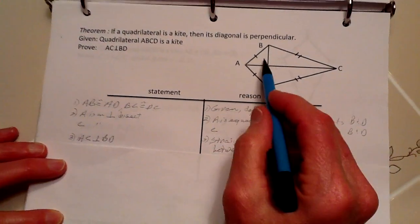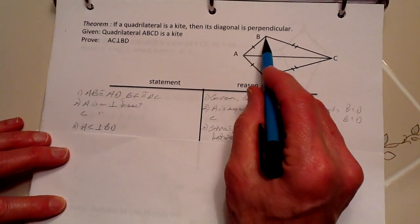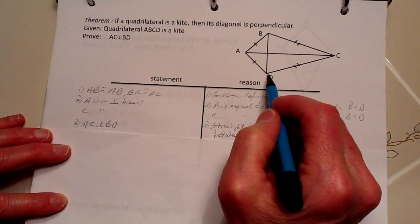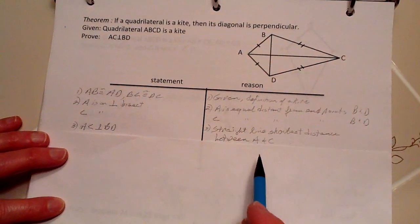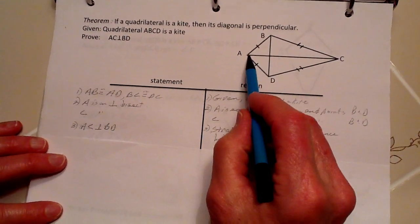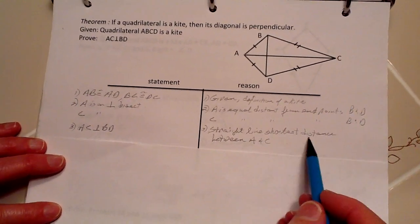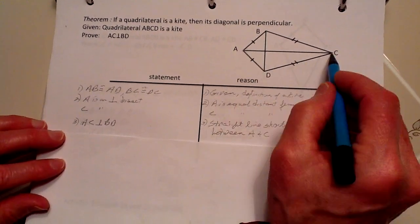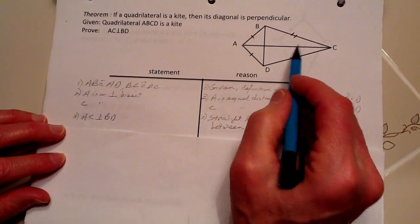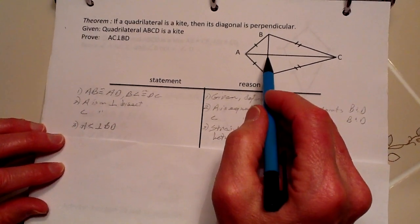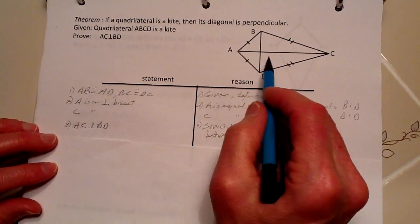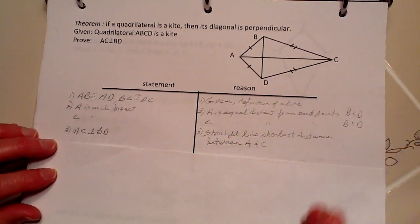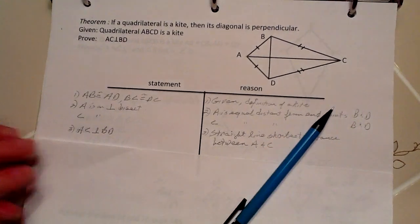From that, we can conclude that AC is perpendicular to BD because the straight line is the shortest distance between A and C. And therefore, since these both lie on there, AC is perpendicular to BD, which we have just proven. Thank you.